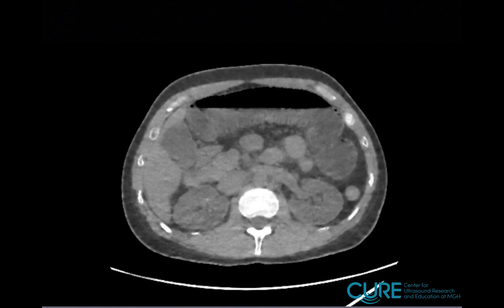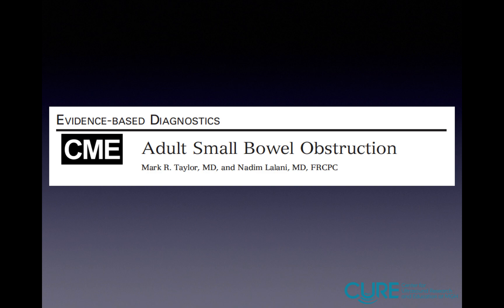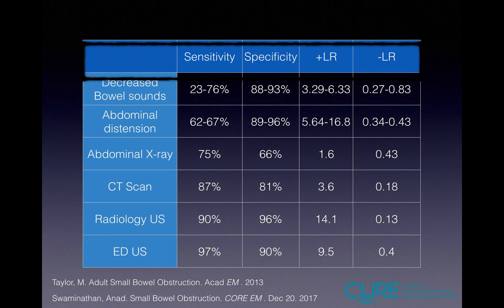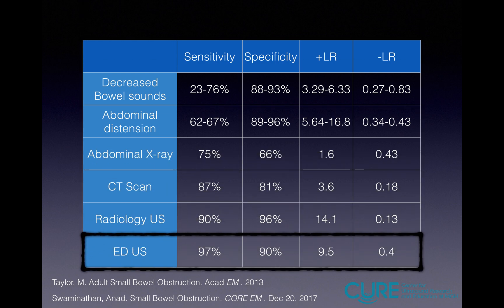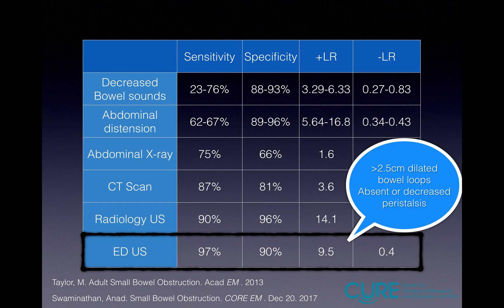If we saw it on ultrasound and on CAT scan, what's the data on how good different imaging modalities are for diagnosing bowel obstruction? This is a meta-analysis done by Taylor and colleagues in Canada. They looked at different imaging modalities — ultrasound, CAT scan, and abdominal x-ray — to see how well they were in diagnosing SBO. Their data shows that point-of-care ultrasound is superior to CAT scan and abdominal x-ray in diagnosing SBO. Their inclusion criteria were bowel loops more than 2.5 centimeters and absent or decreased peristalsis. So if point-of-care ultrasound is superior to CAT scan, why do we still do CAT scans?